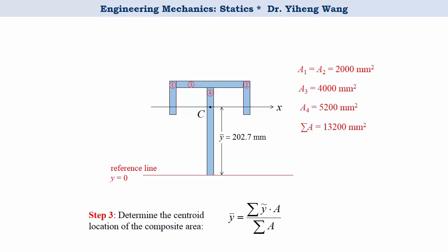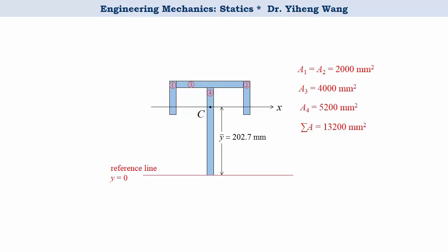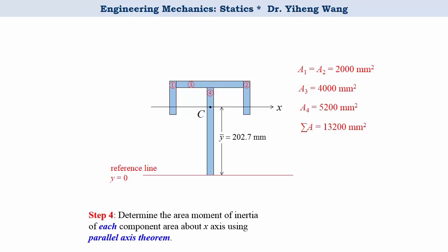I kept all the area information on this slide because we will still need it later. Now step four: determine the area moment of inertia of each component area about the x-axis using the parallel axis theorem. The parallel axis theorem states that if we know the moment of inertia of an area about its own centroidal axis, we can calculate its moment of inertia about any parallel axis by adding the term A·d² to it, where A is its area and d is the perpendicular distance between the two parallel axes.